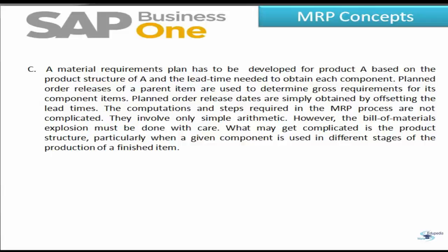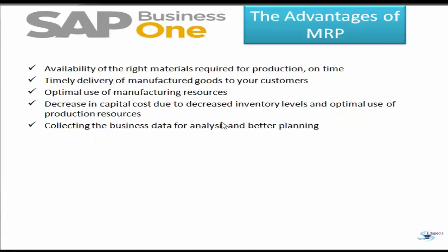Later on when we see this within SAP Business One, all things will be clear. A material requirement plan has to be developed for product A, since that is the desired product we are looking for. It has to be developed based on the product structure of A and the lead time needed to obtain each component. Planned order releases of a parent item are used to determine gross requirements for component items. Planned order release dates are obtained by offsetting the lead times.